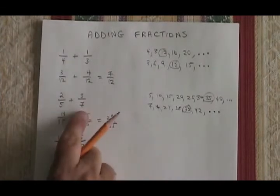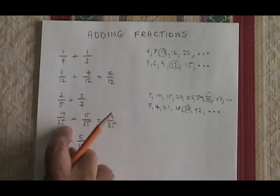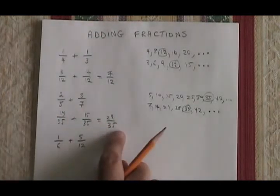Again, if I had multiplied my original denominators, I would have gotten 35. I would have gotten the lowest common denominator, and I would have gotten the right answer.